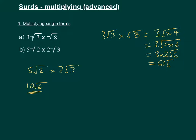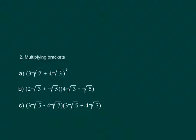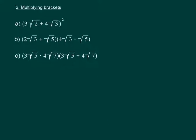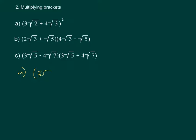Now let's move on to multiplying brackets. So this first one here, we've got 3 root 2 plus 4 root 3 squared, which just means we're multiplying the bracket by itself.